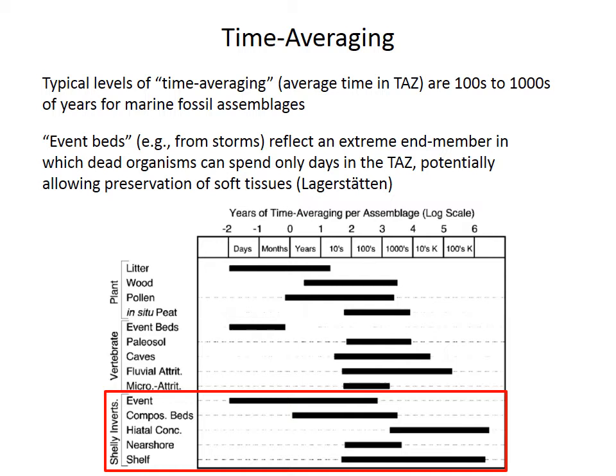In a shallow marine environment, typical levels of time averaging in a near-shore or shelf environment are on the order of hundreds to thousands of years, at least based on radiocarbon dating of modern shells. But there are instances such as event beds — such as storms — that represent an end member where dead organisms can spend only days or even hours in the taphonomically active zone. This really reduces the rate of time averaging and taphonomic destruction, and so can lead to preservation of soft tissues in exceptional localities called Lagerstätten, or to the preservation of articulated organisms like crinoids that might normally disarticulate.